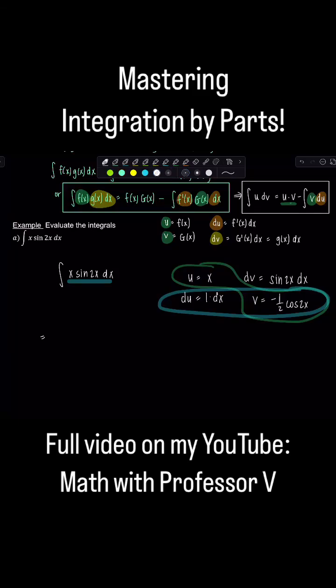So that's going to be negative one half x cosine 2x minus the integral of vdu, which we're very excited about, which is negative one half cosine 2x dx.